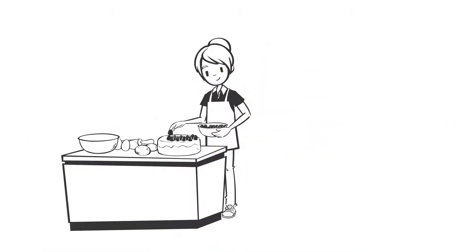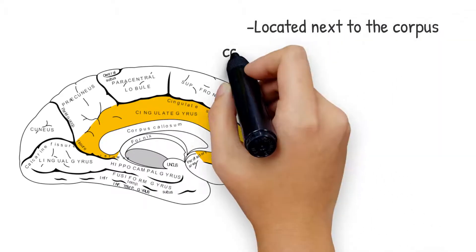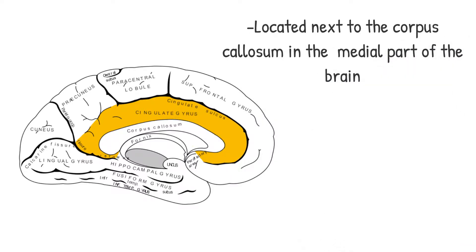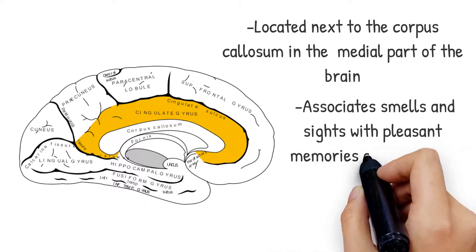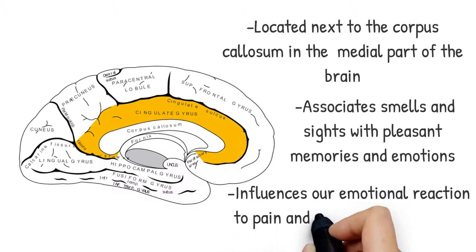If smelling cake baking takes you back to your grandma's house, you've got the cingulate gyrus to thank. Located next to the corpus callosum in the medial part of the brain, the structure's frontal part associates smells and sights with pleasant memories and emotions. It also influences our emotional reaction to pain and regulates aggressive behavior.